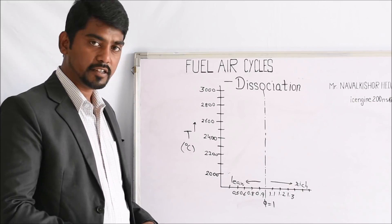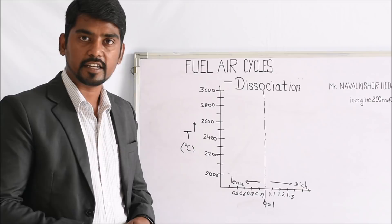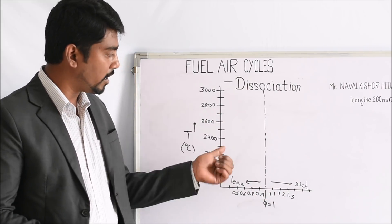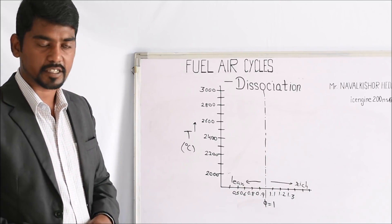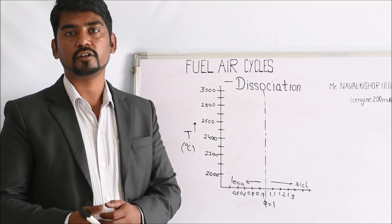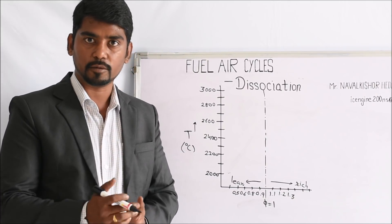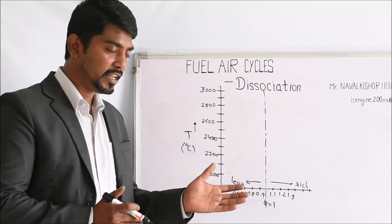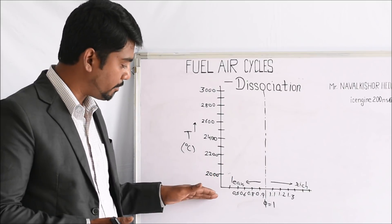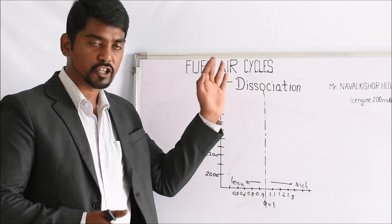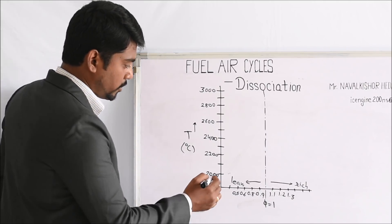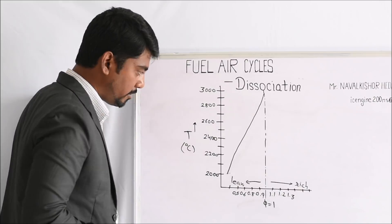The effect of dissociation is most profound at around 2000 degree Celsius. We have drawn a graph with temperature in degree Celsius on the y-axis and equivalence ratio on the x-axis. On the leaner side of the graph, the quantity of air is more compared to the quantity of fuel, so a cooling effect is observed during combustion, keeping the temperature of the combustion zone lower. That is why at the leanest mixture we have the lowest temperature, and at the stoichiometric mixture — where all the fuel gets burned — the temperature is maximum.